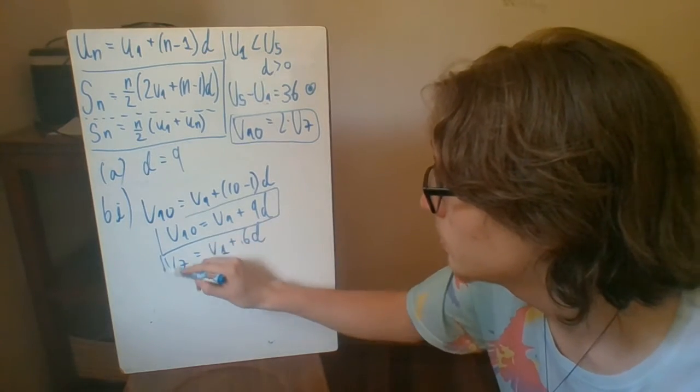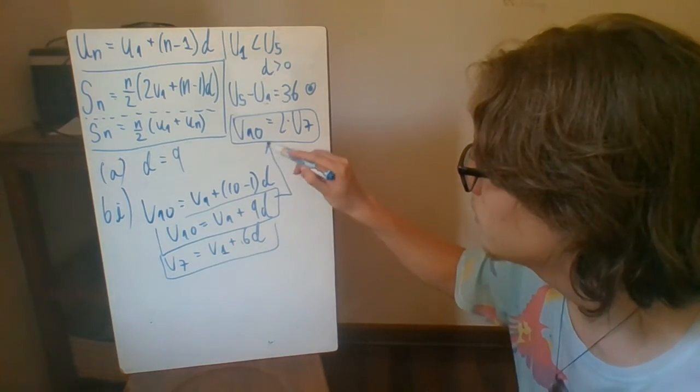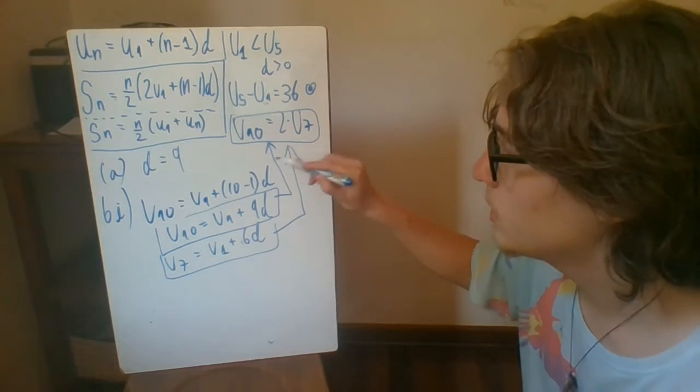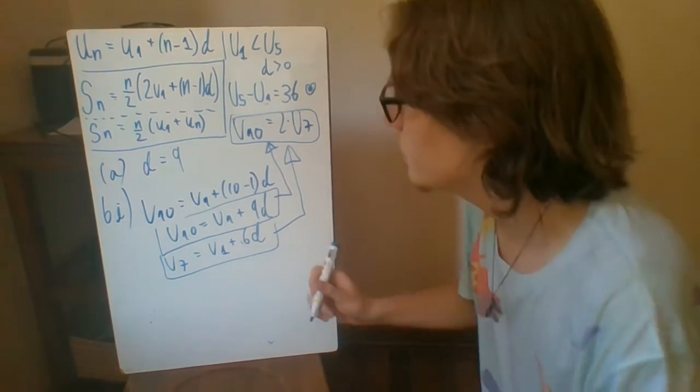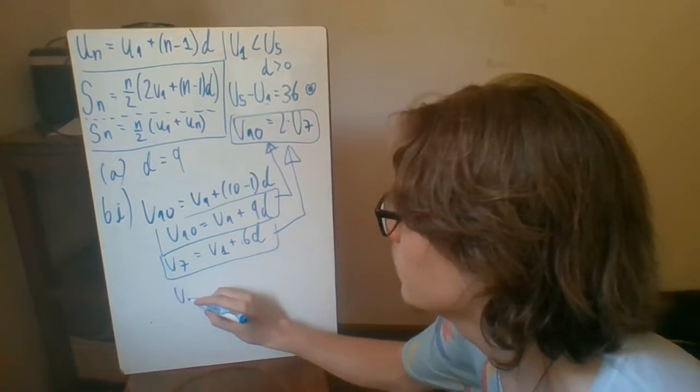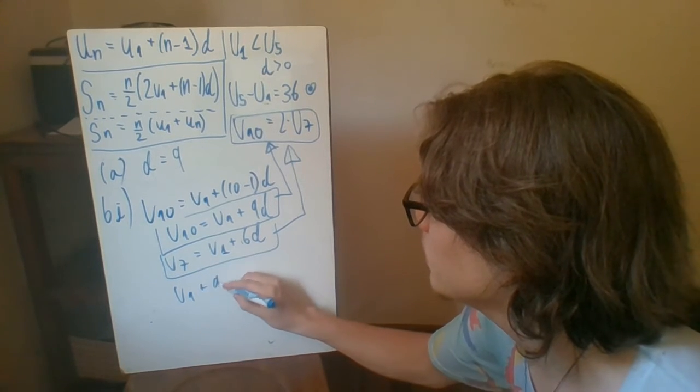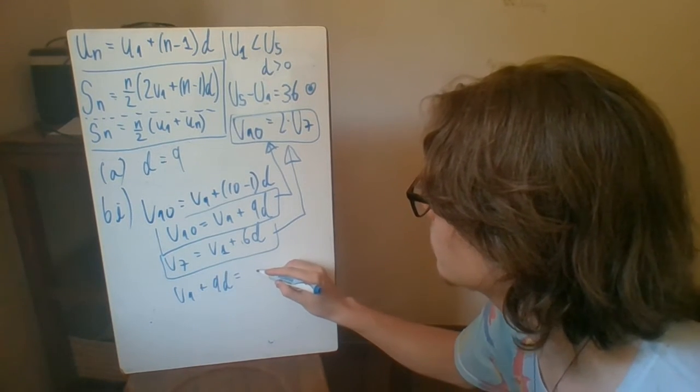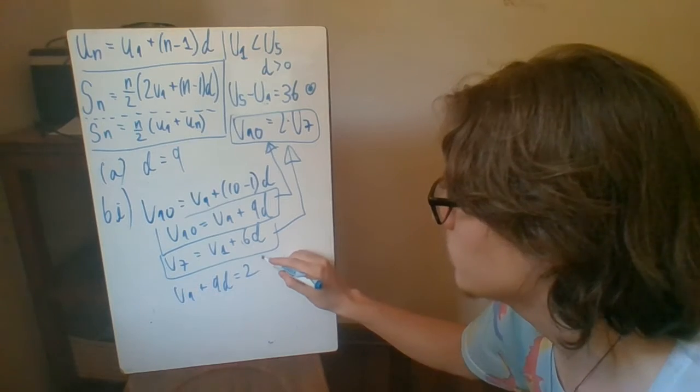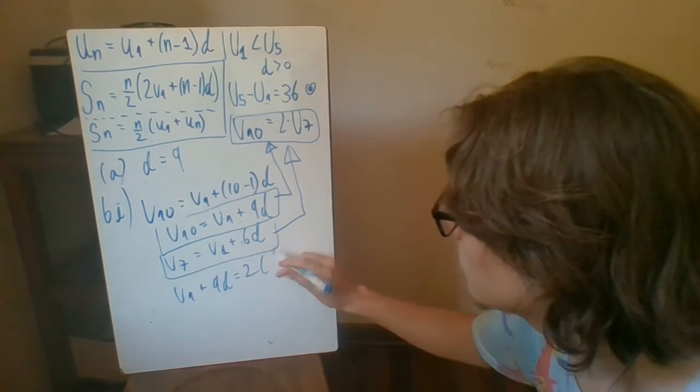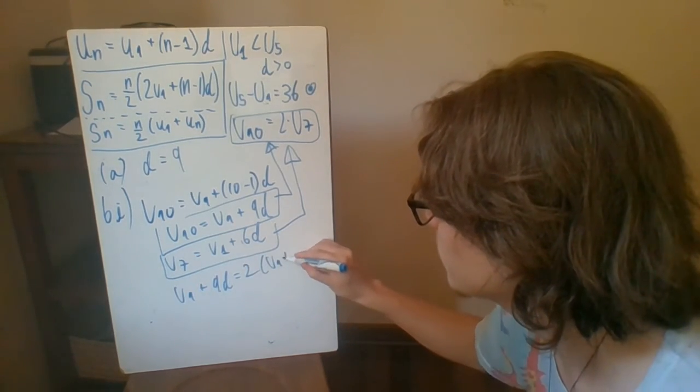So using both of these, plugging it in to the information that they gave us, we end up with the following: u1 plus 9d equals 2 times u7, which would be u1 plus 6d.